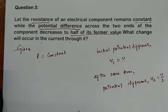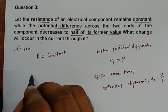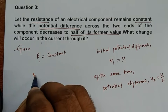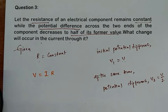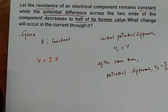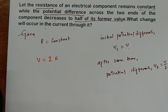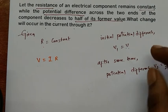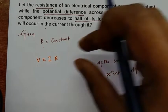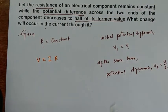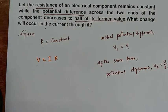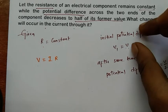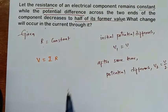We know the formula is Ohm's Law: V is equal to IR. Now I am going to apply the initial conditions to it, and after that apply the later conditions to it, so I will get two equations.